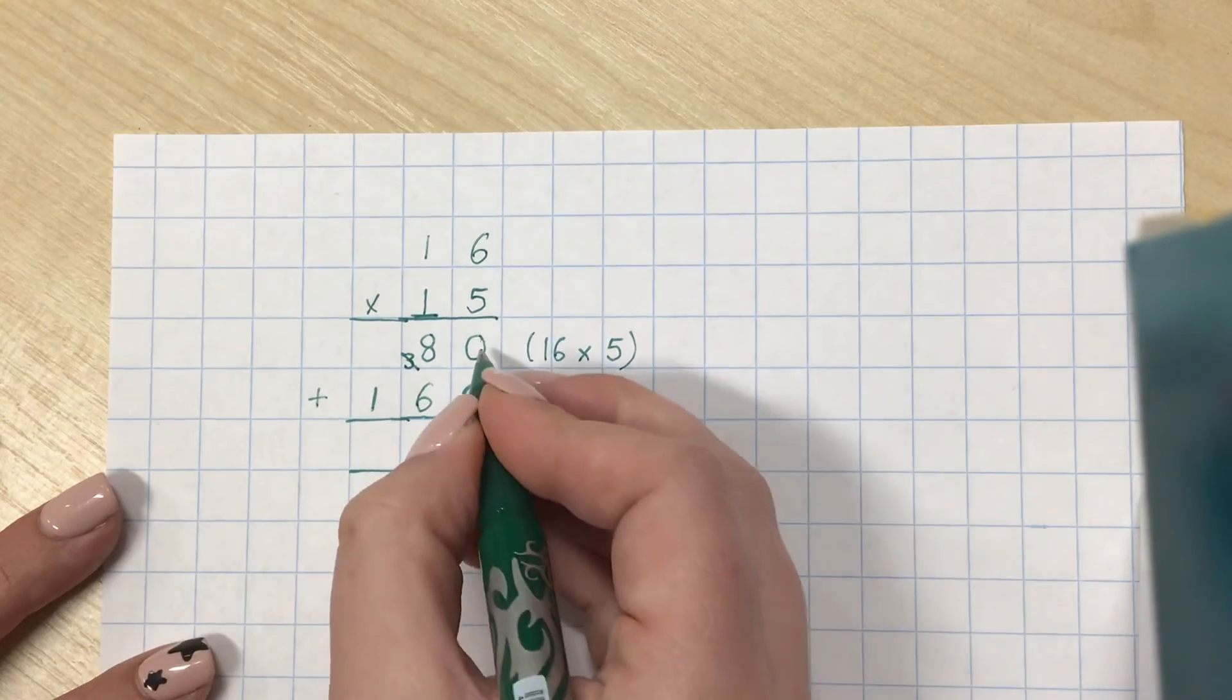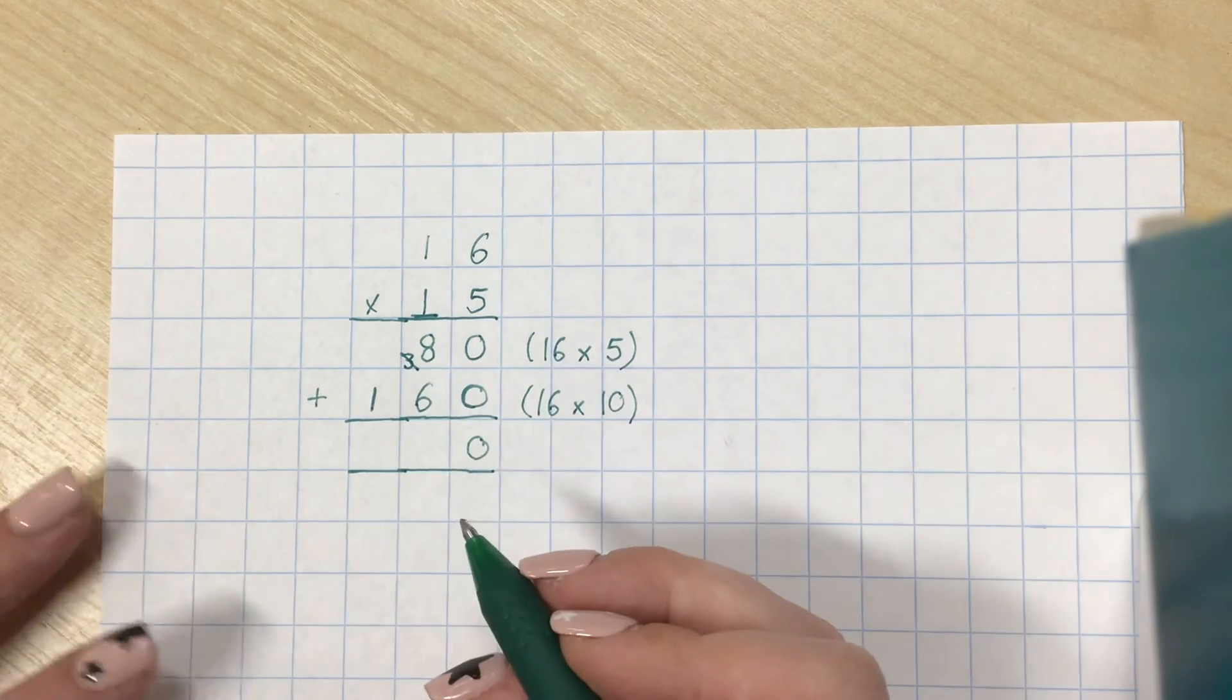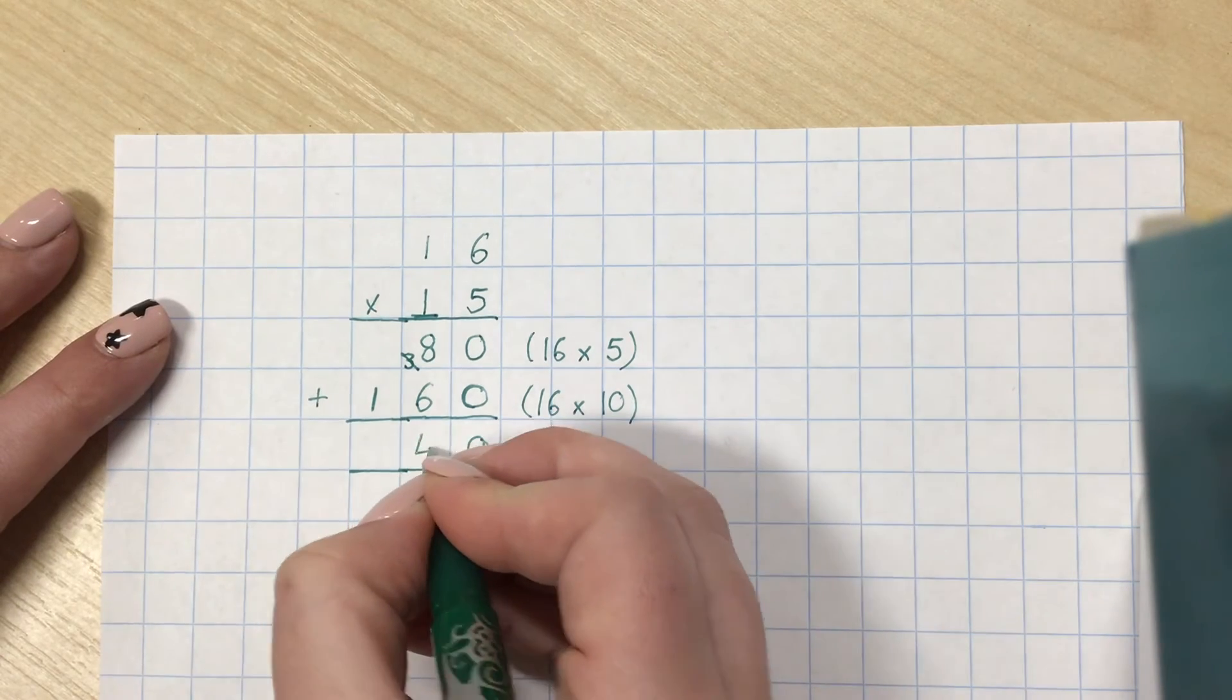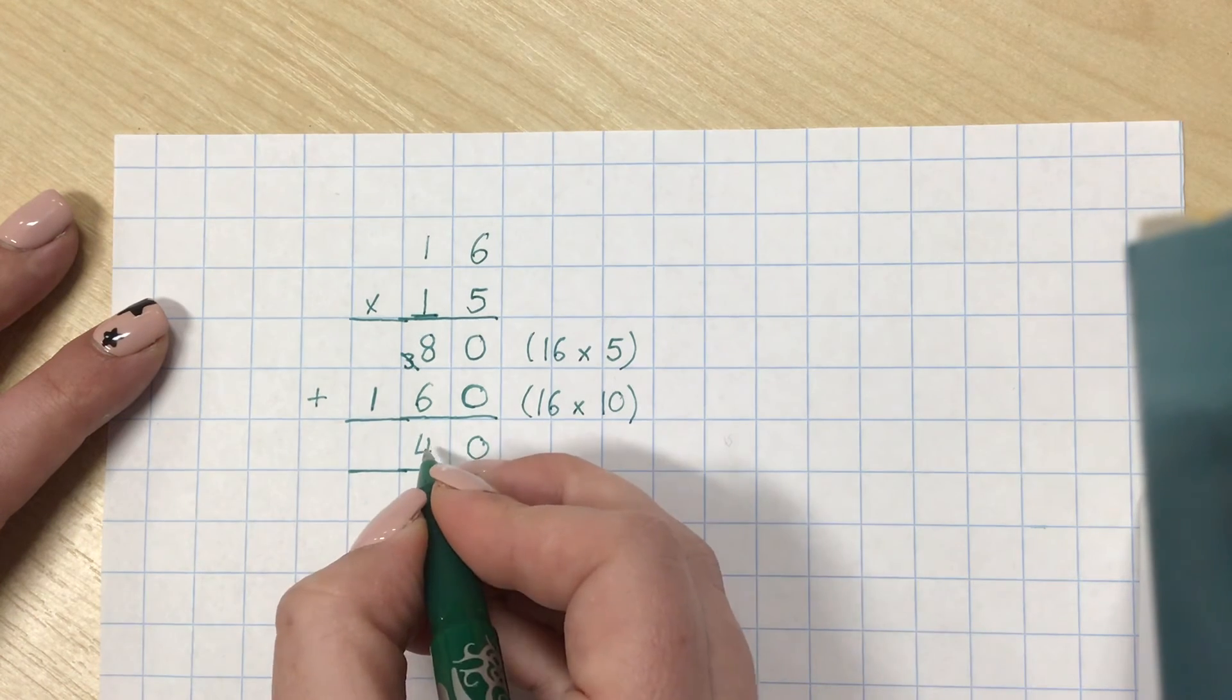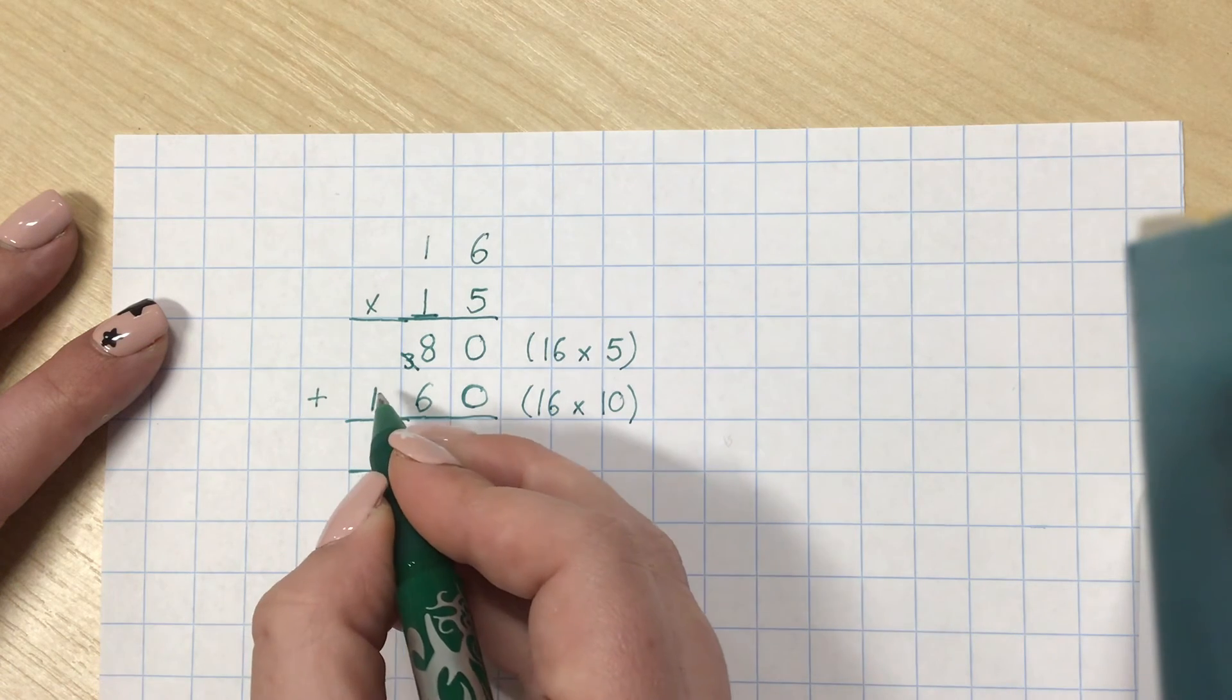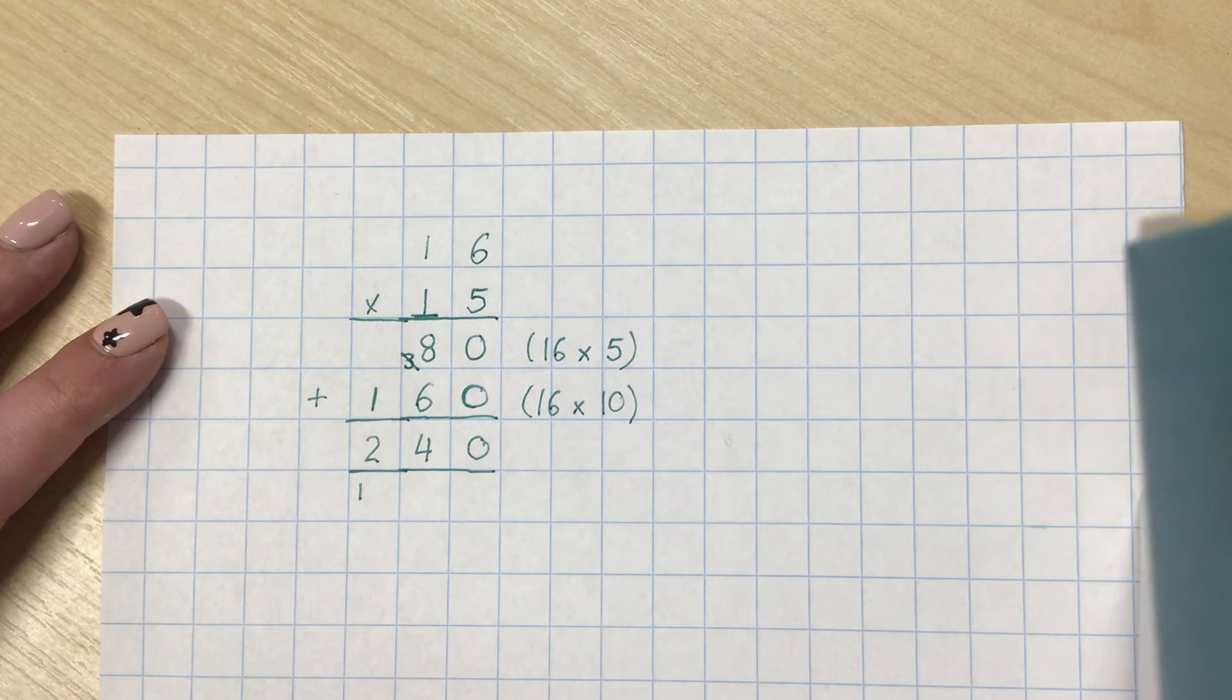And then, finally, I need to do 0 add 0, which is 0. 8 add 6, 9, 10, 11, 12, 13, 14. Put the 4 in there because it is the ones. There are 4 ones in 14. So, I place that digit, carry the 10. And then, in my hundreds column, I've got 1 plus my carried over, which is going to give me 2.